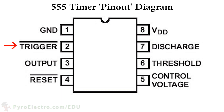Trigger is the pin which will tell output to change between a digital 0 or 0V output and a digital 1 or about 9V output. Output is where the actual output comes from, as you would expect. And finally, reset is the pin that can change the whole 555 timer back to its initial state. For what we're doing, we'll always disable reset.